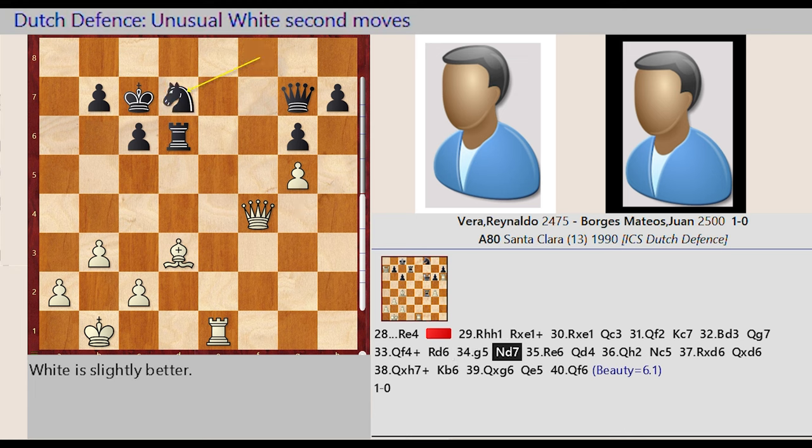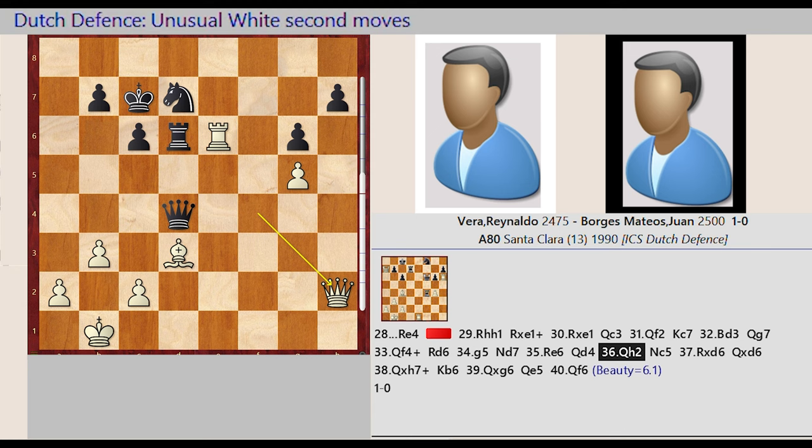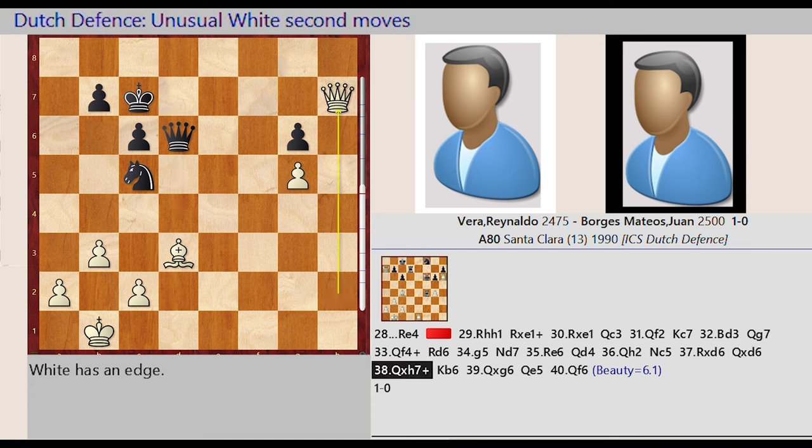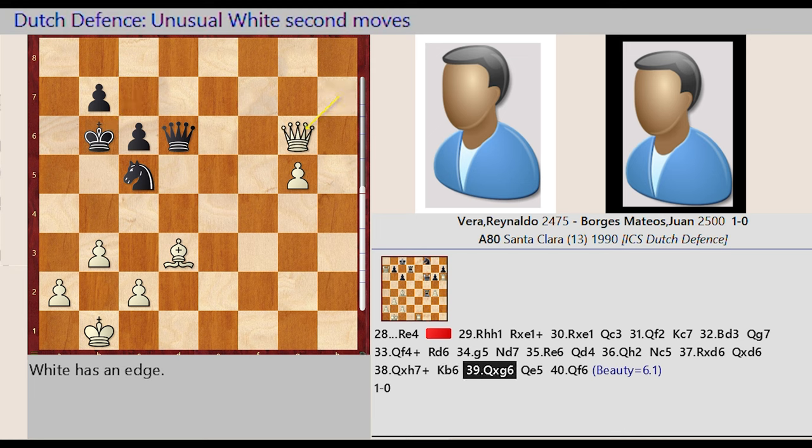Knight D7 C5, Rook E6 captures D6, Queen G7 D4, Queen F4 H2, Knight D7 C5, Rook E6 captures D6, Queen D4 captures D6, Queen H2 takes on H7, King C7 B6, Queen H7 captures G6, Queen D6 E5, Queen G6 F6.